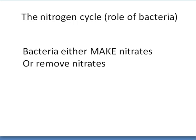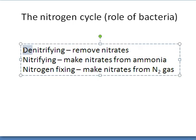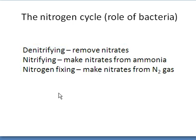There are three types of bacteria, and they do one of two things: they either make nitrates or they remove nitrates. Denitrifying bacteria remove nitrates. Nitrifying bacteria make nitrates from ammonia or ammonium compounds. And then we've also got nitrogen-fixing bacteria, which make nitrates from nitrogen gas directly.